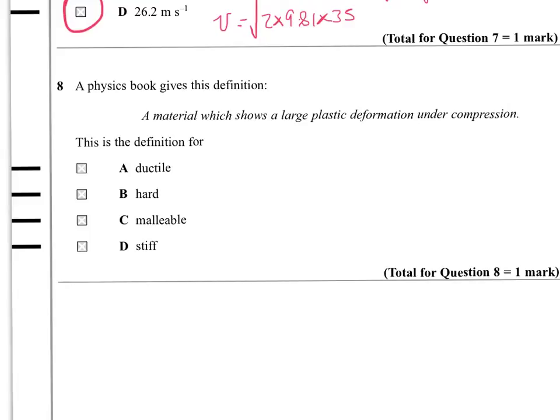Ductile and malleable are the materials that would show big plastic deformations. The difference is that ductile is the ability to be pulled and drawn out into a wire, so that's a tension force. Malleable is the thing that can be hammered. If you think about hammering, it's a compressive force squashing the object. So this is the definition of malleable.